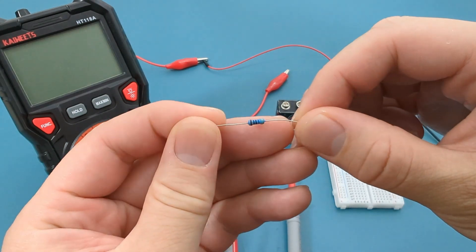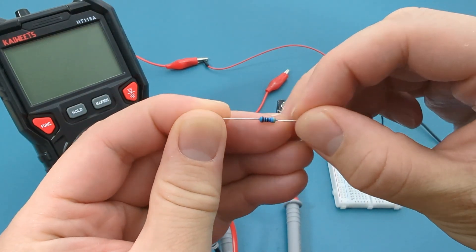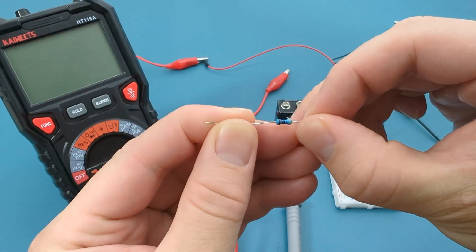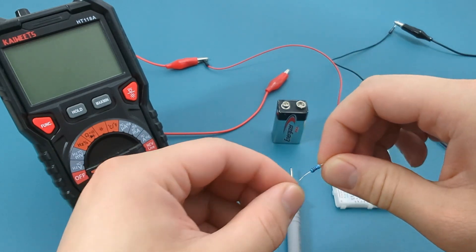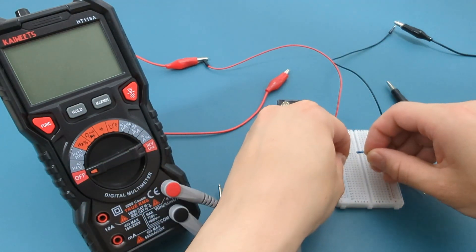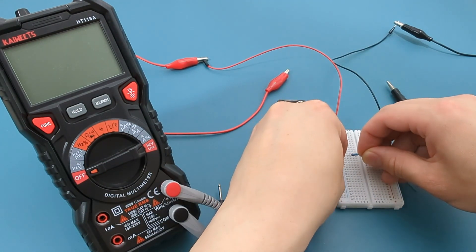For the resistance, I'm using a 470 ohm resistor. Bend the wire ends of the resistor and insert them into the breadboard. The left resistor wire should be in the same column as the positive terminal of the breadboard.